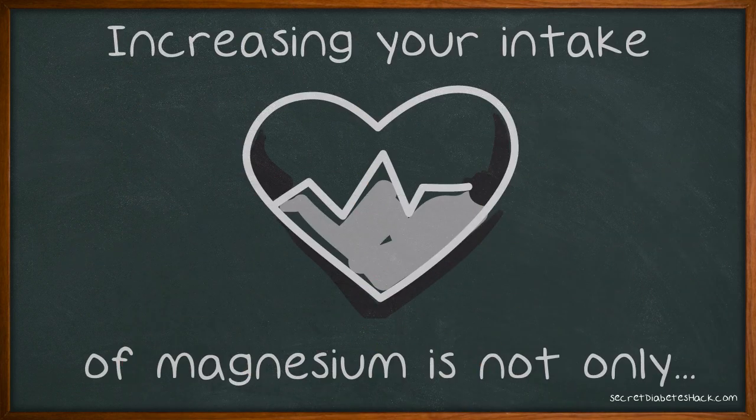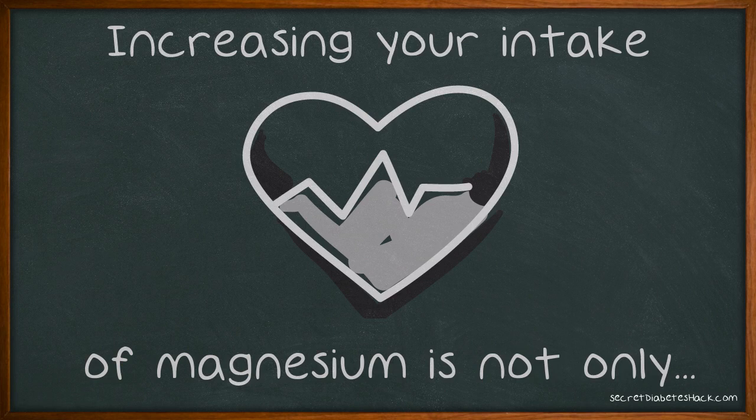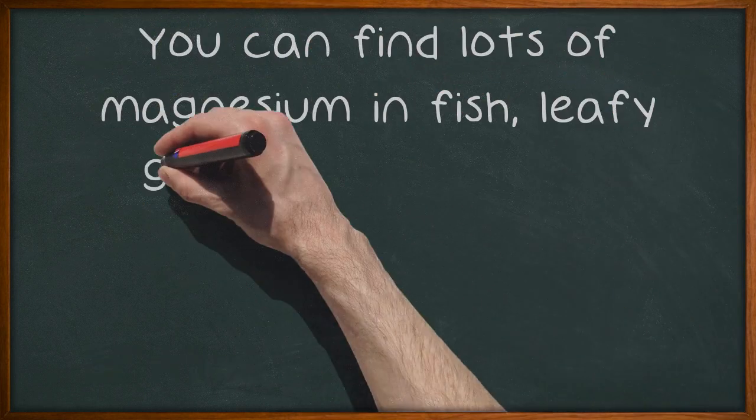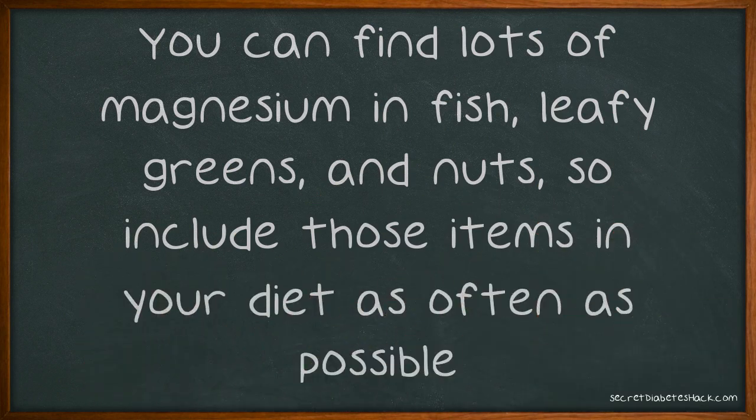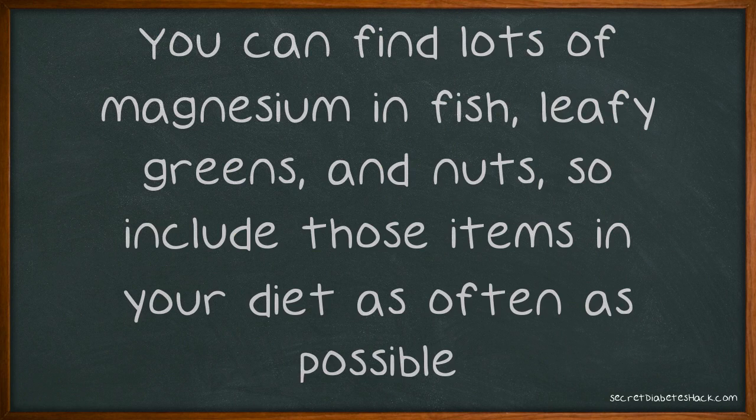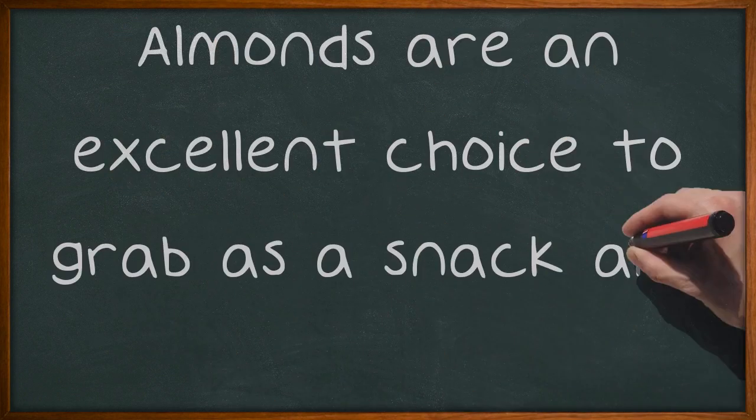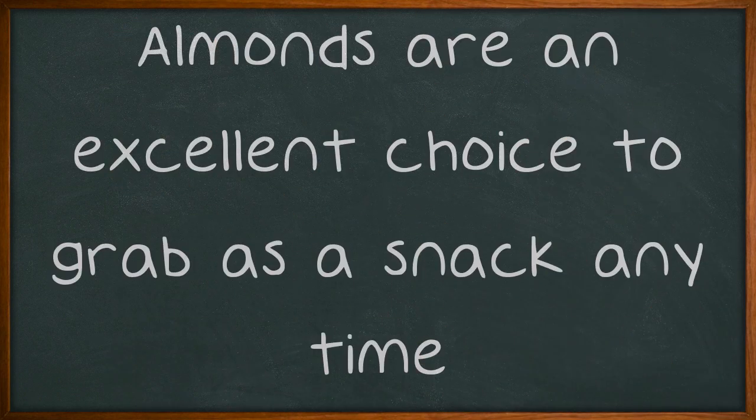Increasing your intake of magnesium is not only good for your heart, it can help your diabetes too. You can find lots of magnesium in fish, leafy greens, and nuts, so include those items in your diet as often as possible. Almonds are an excellent choice to grab as a snack any time.